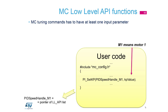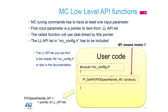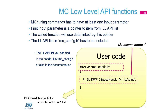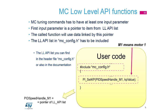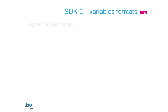You have a handle for the PI speed regulator, and you can find what is possible to use inside the mcconfig header file. There is a list definition — because it's a header file of external variables — you can use it. There are definitions for the speed regulator, current regulator, temperature sensing, bus voltage, and all that stuff. Don't forget to include this header file; if you don't use the include, you won't have this link available.